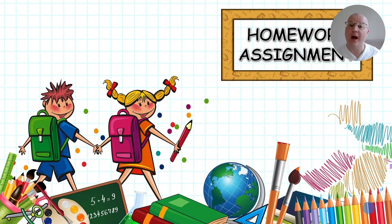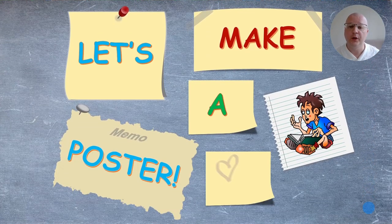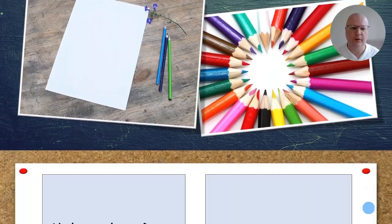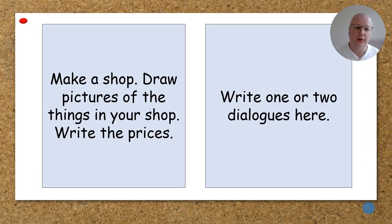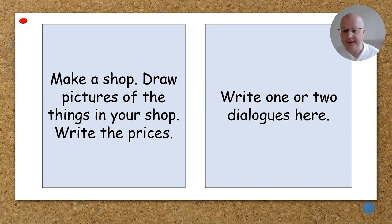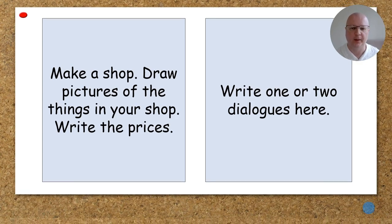Here's an optional activity — I emphasize it's optional — a homework assignment or you can do it in class. This can actually be like a totally different lesson: make a poster. You will need a piece of paper and a few colored pencils. In this activity you need to make a shop, draw pictures of the things in your shop, write the prices, then write one or two dialogues and practice them.